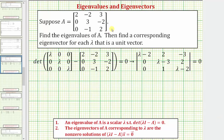Here we're given matrix A, which is a three by three matrix. We're asked to find the eigenvalues of matrix A, and then find a corresponding eigenvector for each lambda that is a unit vector. So we'll first find the eigenvalues by solving the equation where we have the determinant of the difference of lambda I and A equals zero. And then we'll find all the eigenvectors of A corresponding to each lambda, which are the non-zero solutions. Once we find the eigenvectors, we'll then find a unit eigenvector for each lambda.